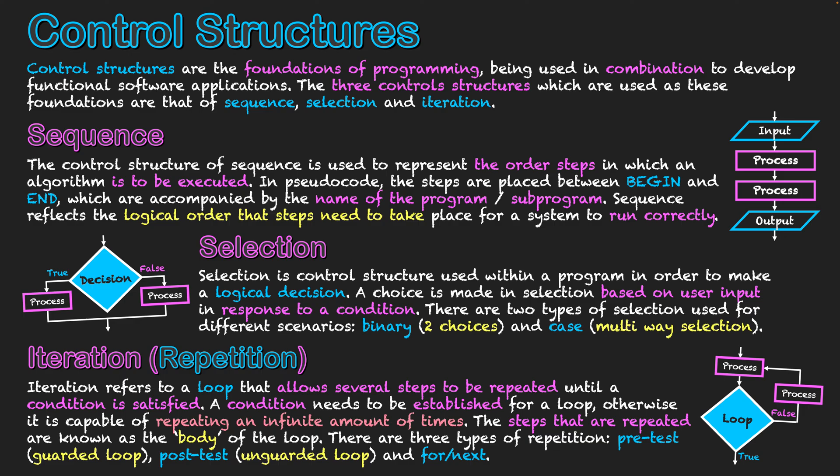A condition needs to be established for the loop, otherwise it is capable of repeating itself infinite amount of times. And that's obviously a big error within programs because it means it could potentially freeze or you can't progress in your program. So there always needs to be a way that our steps are logically organized that we can exit the loop, and that it still allows us to go ahead with our program. And obviously, there's an error in place if it's not reading our data correctly and keeping us within the loop.